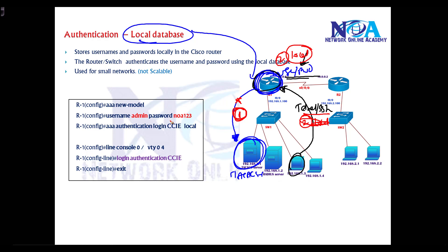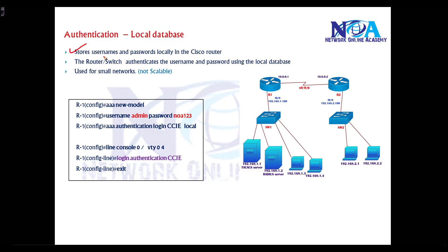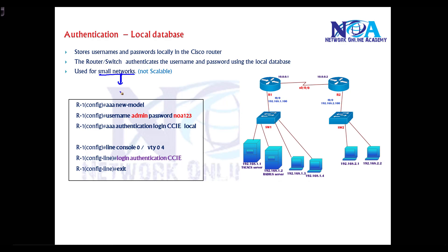In this example I'm going to configure only local authentication, but in the next videos we'll also see how to configure external servers. Authentication in a local database means the username and password are stored on the local device — it's practically not a scalable solution, suitable only for very small networks with five to six devices.